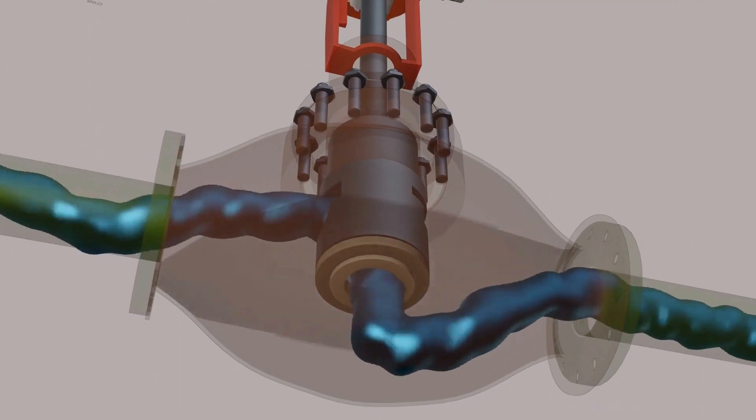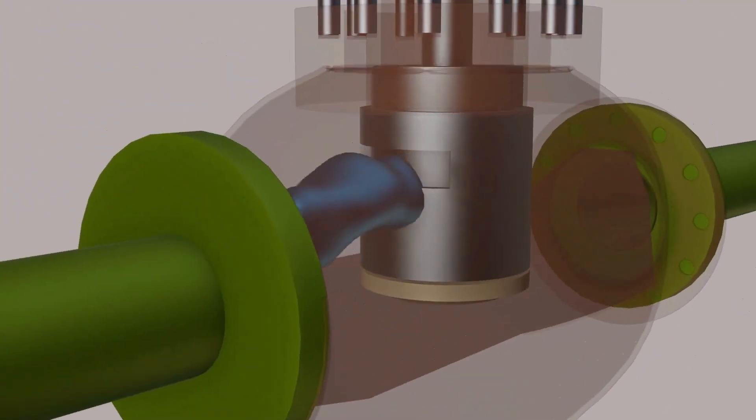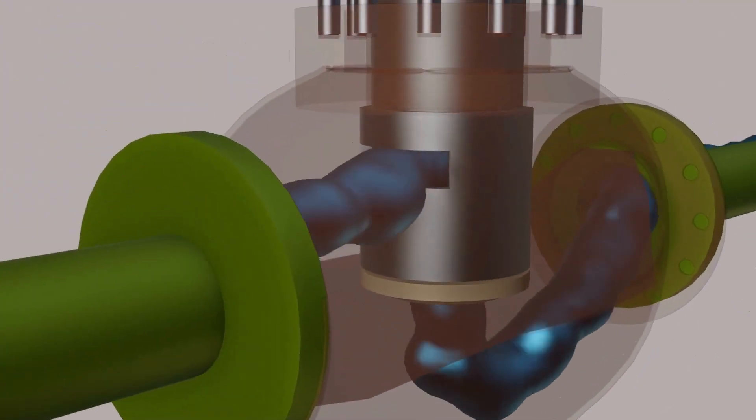This is how fluid flows on the globe valve. Flow up and flow down are two types used in globe body.